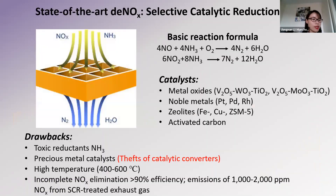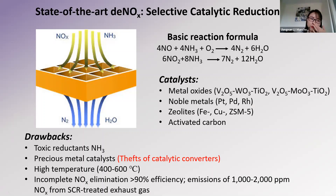As you may know, the most mature technology for deNOx is selective catalytic reduction (SCR) with ammonia. To some extent, SCR can effectively convert NOx to nitrogen and water, but there are some problems. For example, toxic ammonia gas and high temperatures are necessary for this reaction, which is not friendly in terms of energy or operation.